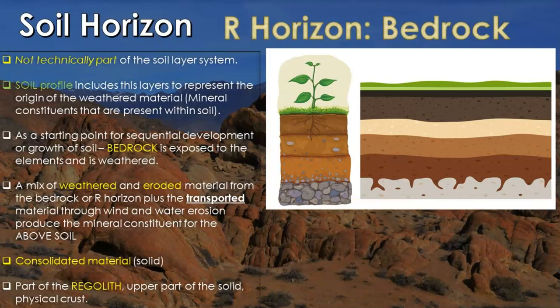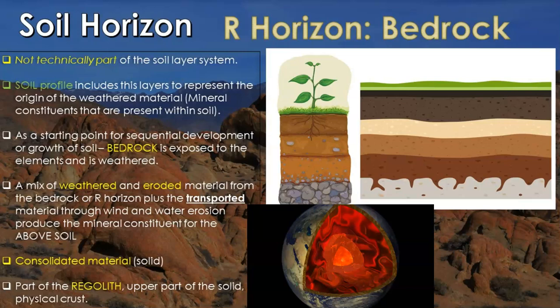This is the part of the Earth's interior right at the surface, which is the upper part of what's called the regolith. Below this bedrock you have continued rock layers and rock strata down through the crust, which is mostly between 15 and 25 kilometers thick. Then you get into the first layer of the mantle, which is the lithosphere.